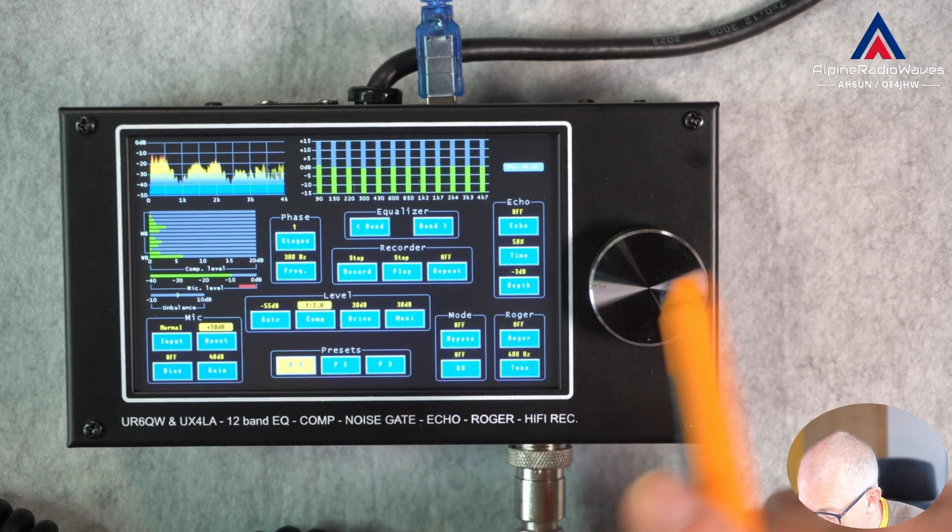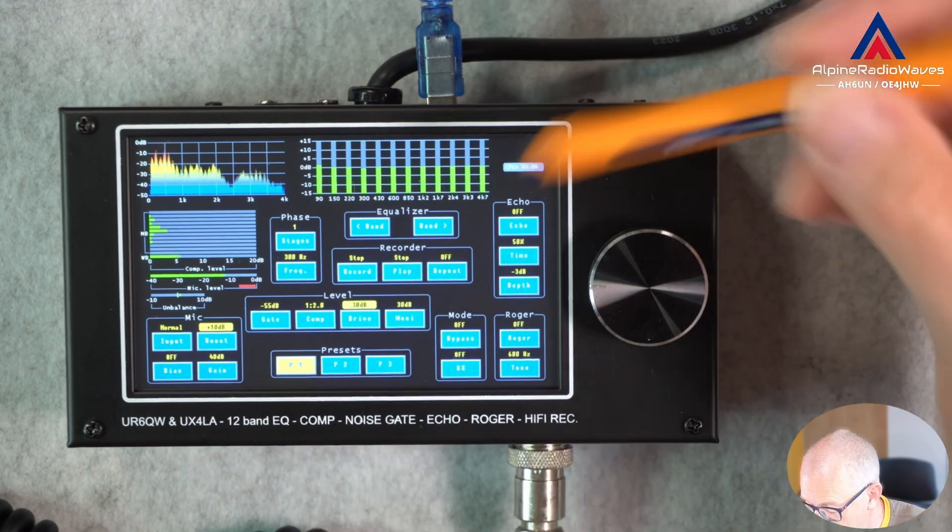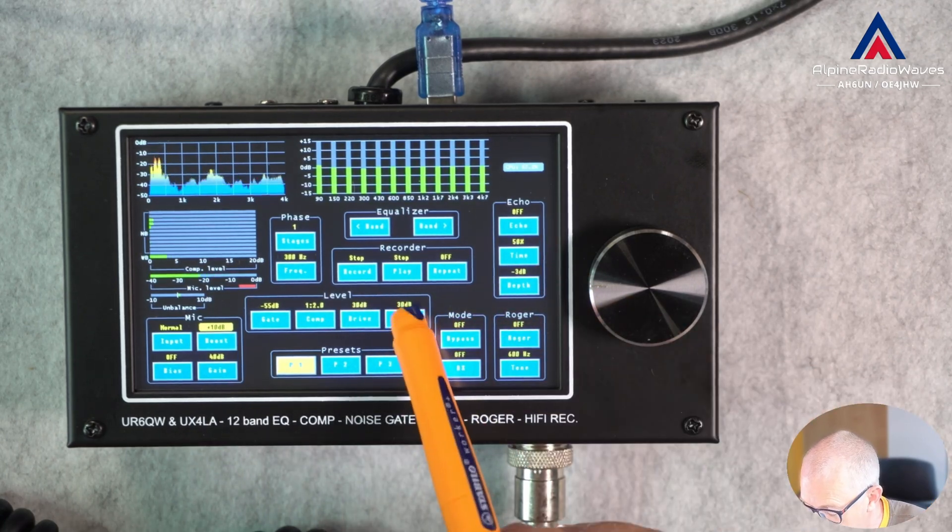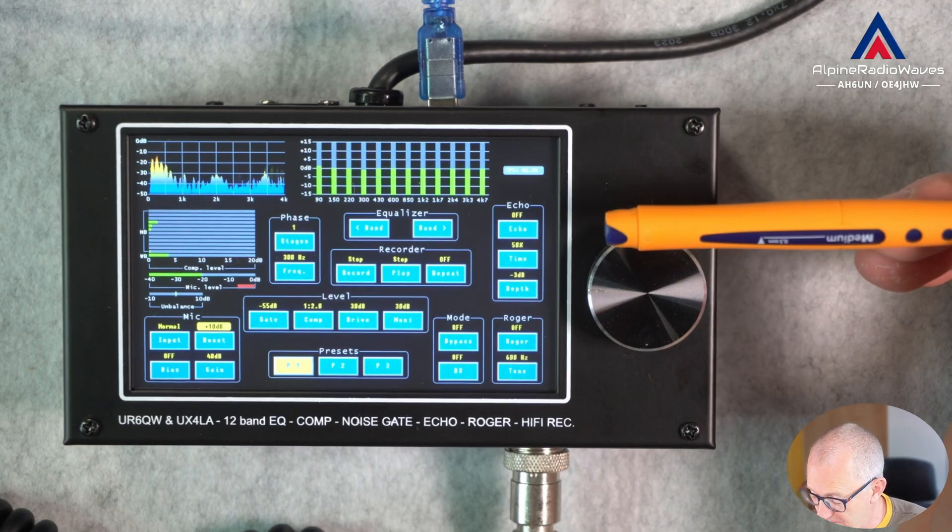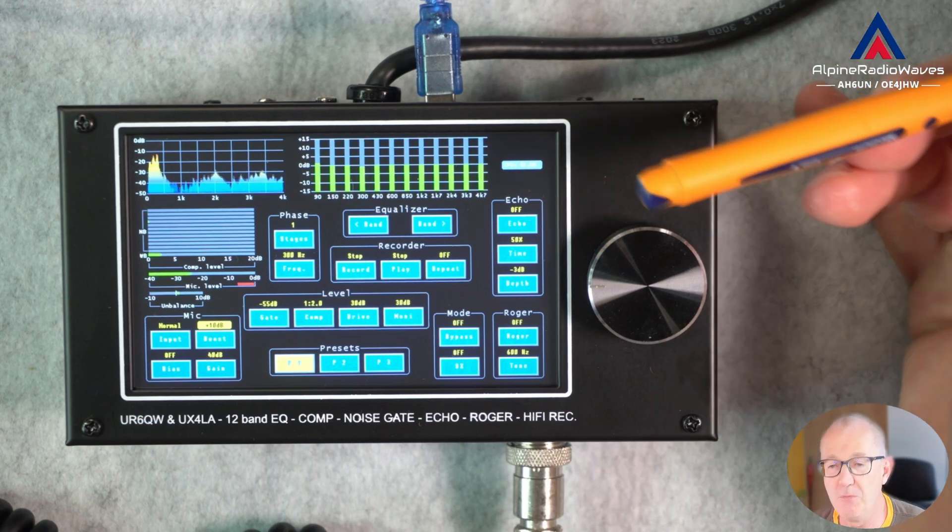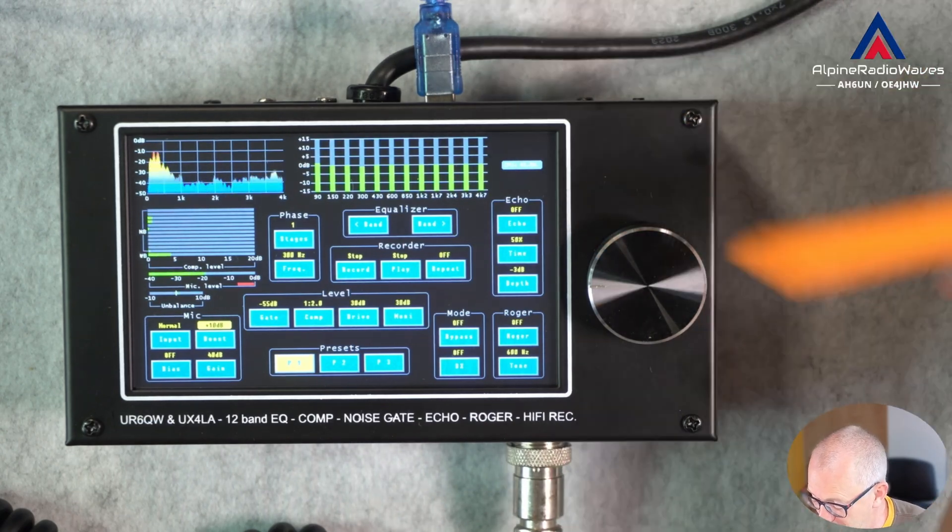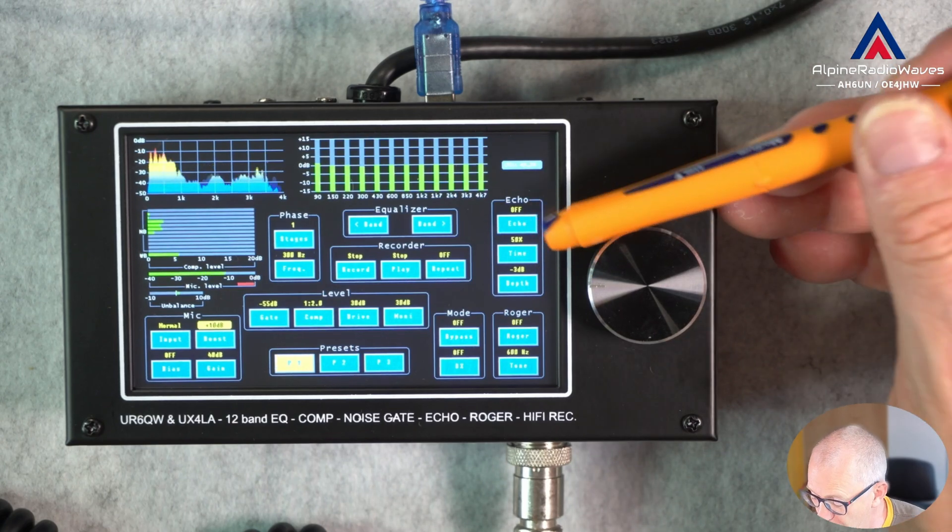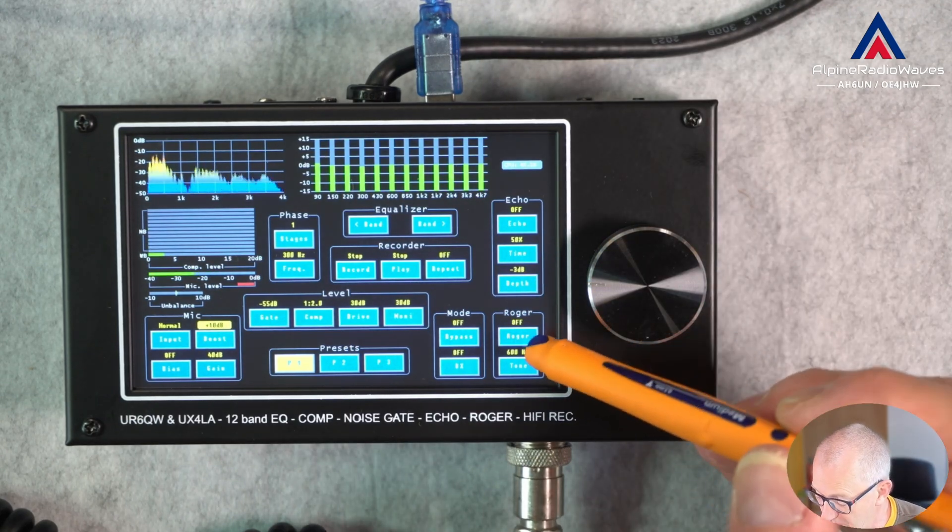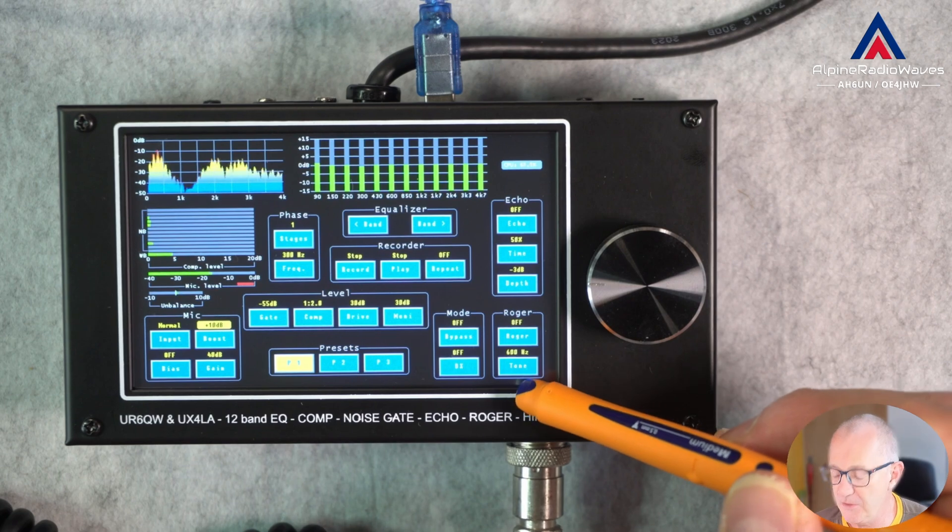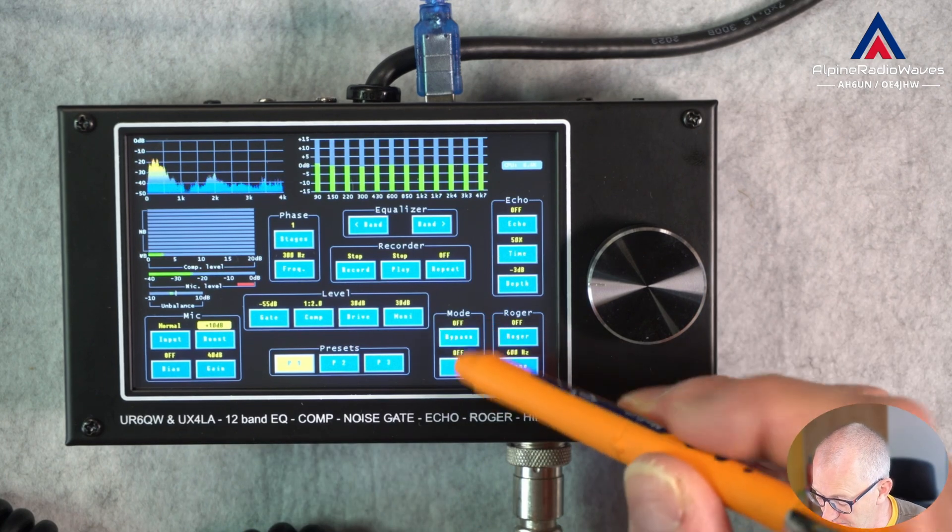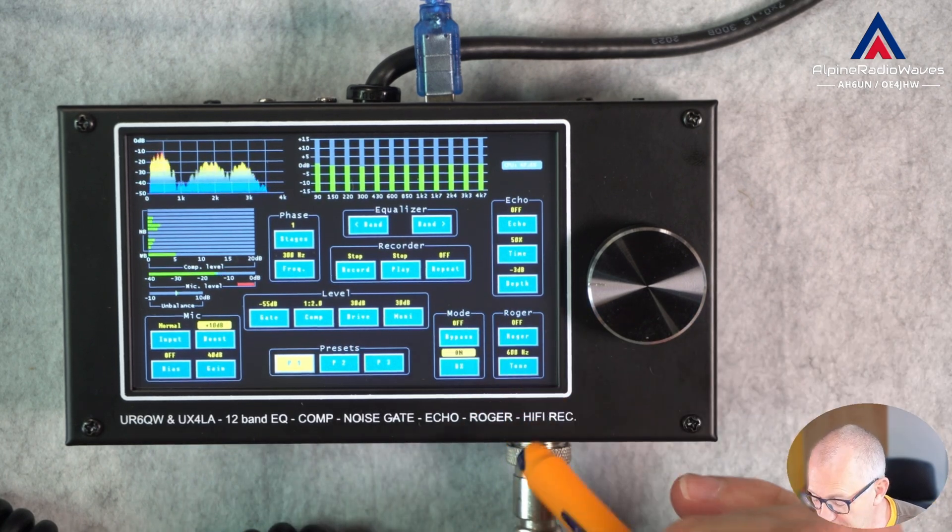Then you have the compressor. You have the drive level of the microphone. So, that's the output level to the radio. And you can set the monitor level. And let's go to the right hand side. You can set the echo. If you want to use it on CB, for example. It's a nice gimmick. You have the echo. You can turn it on or off. Set the time and the delay. And set the depth. And you can turn the roger beep on or off. You can change the roger beep tone. And you can bypass the equalizer. And you can turn DX on and off.